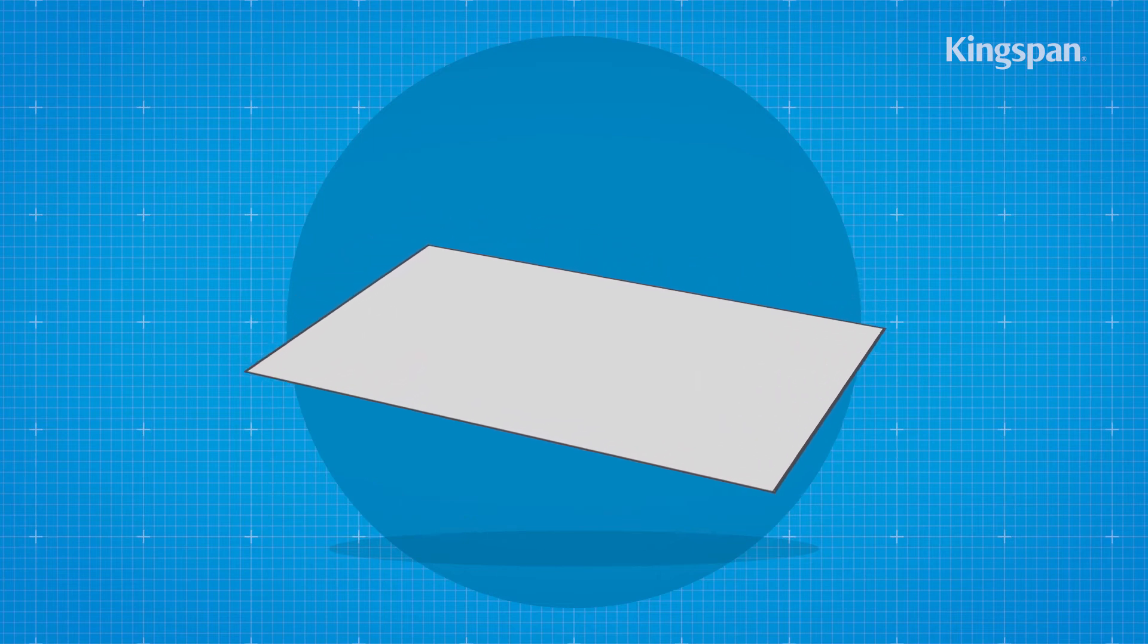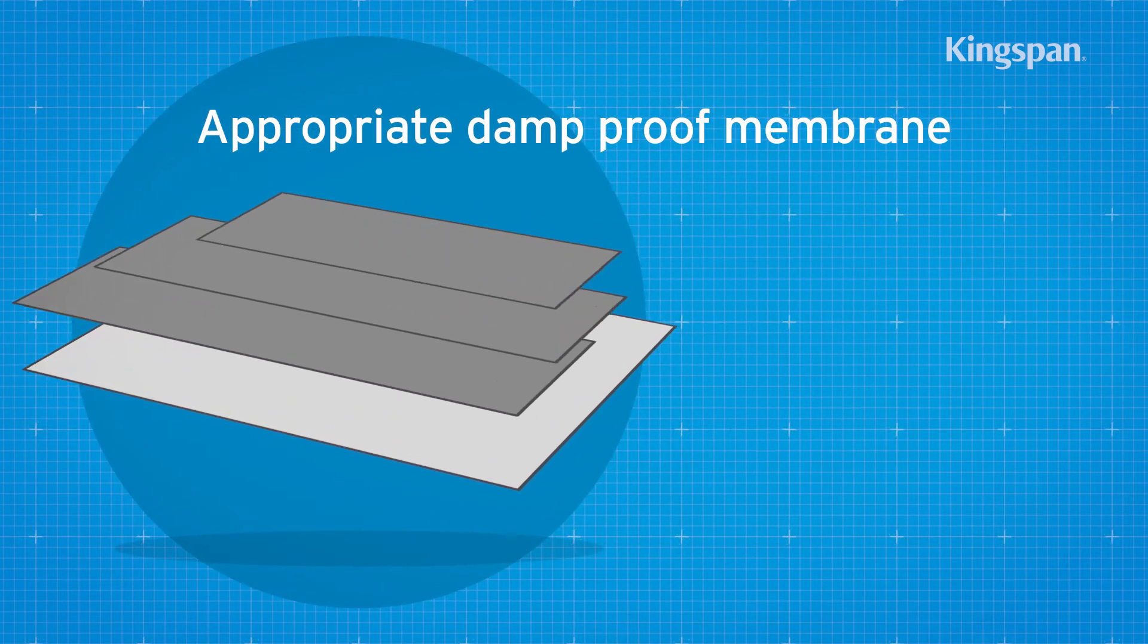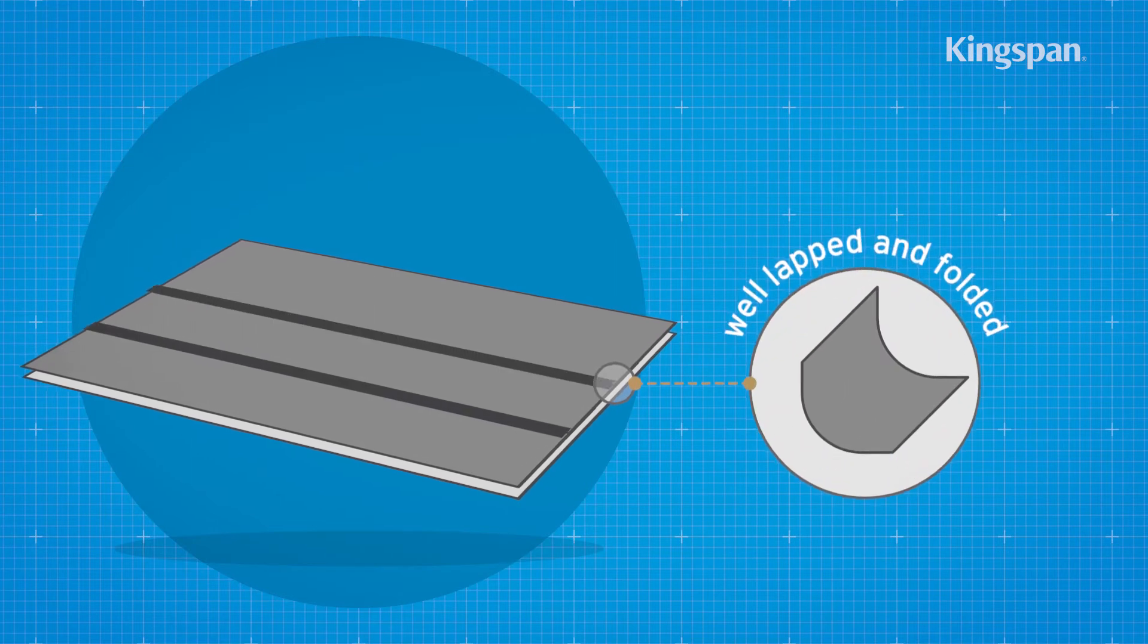An appropriate damp-proof membrane should be laid with joints well lapped and folded prior to installing the insulation boards.